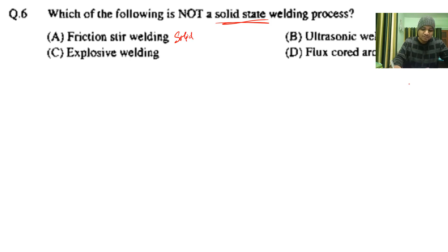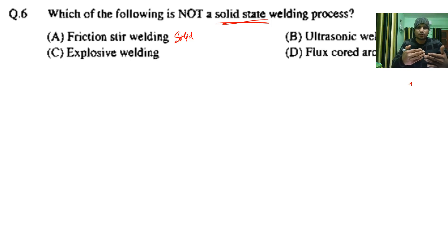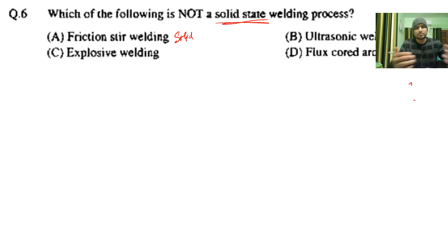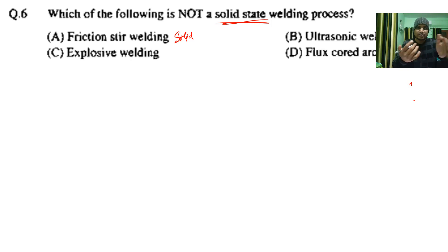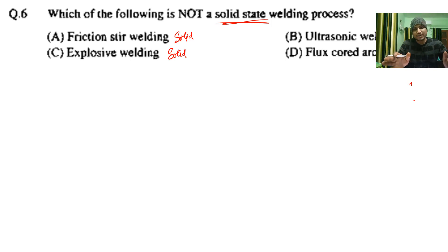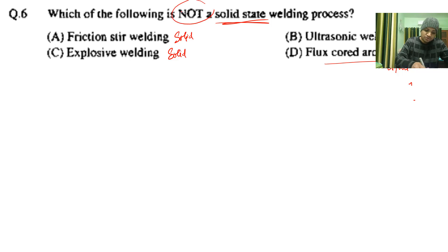Next, ultrasonic welding is similar — it works through pulse movement, so it is also a solid state welding process. Explosive welding uses an explosive to achieve a very high strain rate, which generates heat and leads to welding — also solid state. But flux cored arc welding involves an arc, which means there will be melting, making it a liquid state process. So option D is the correct answer.